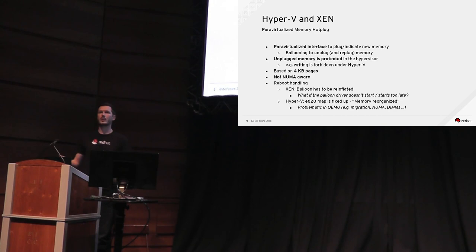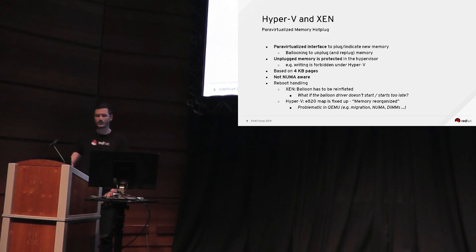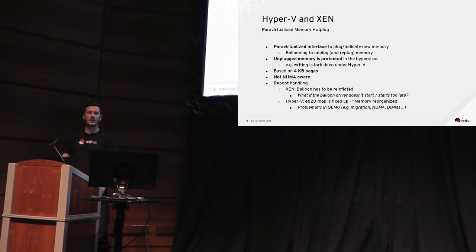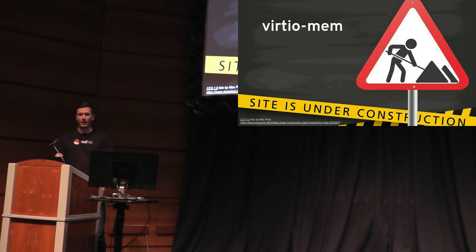Still, Hyper-V and Xen base their technology on 4 KB pages and are not NUMA-aware. They also differ in handling reboots with an inflated balloon: Xen keeps the memory layout unchanged and requires the balloon to be re-inflated on reboot — risky if the balloon driver is missing or broken. Hyper-V goes to the other extreme and rearranges memory on reboot so the new system doesn't need to handle ballooning — but rearranging guest memory is very problematic for migration, NUMA, and DIMMs.